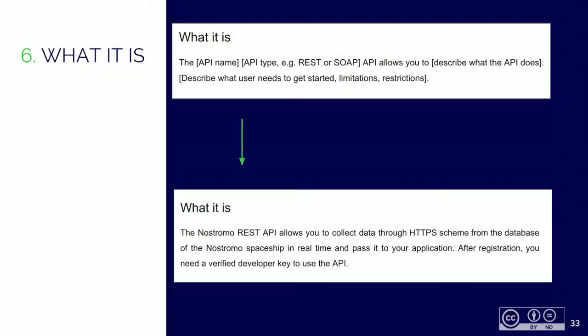The next section is 'What is it?' The section describes the type of the API — whether it is REST or SOAP — and what it allows the users to do. There is also further information on what the user needs to get started, its limitations and restrictions if any.